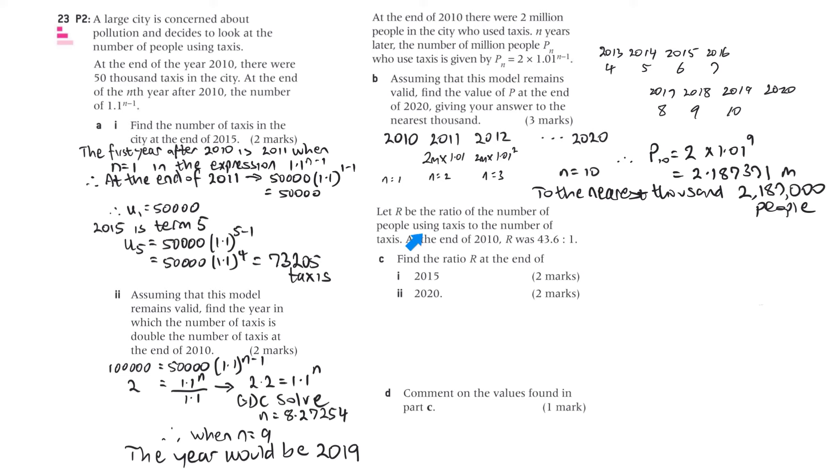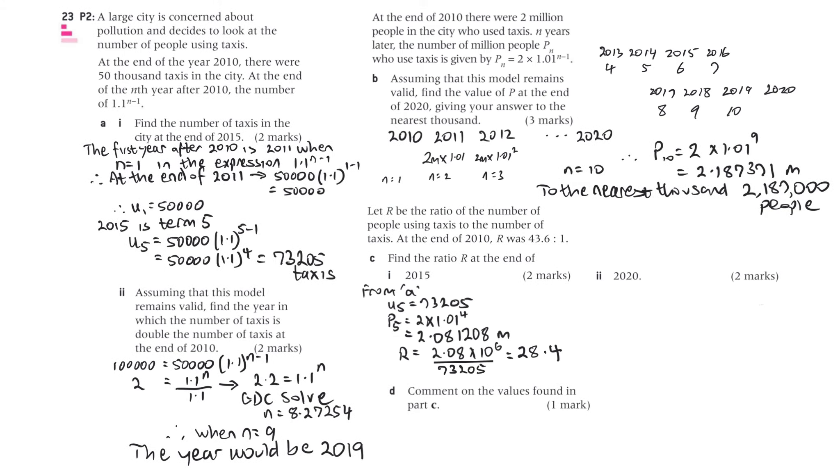Let r be the ratio of the number of people using taxis to the number of taxis. At the end of 2010, r was 43.6 to 1. Part C. Find the ratio r at the end of i, 2015, and ii, 2020.